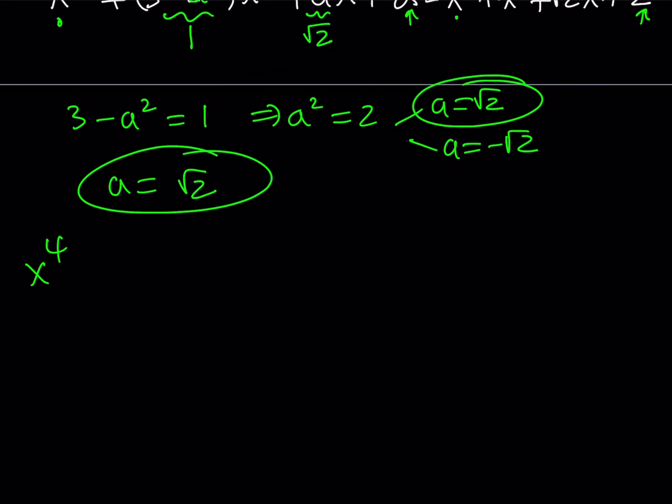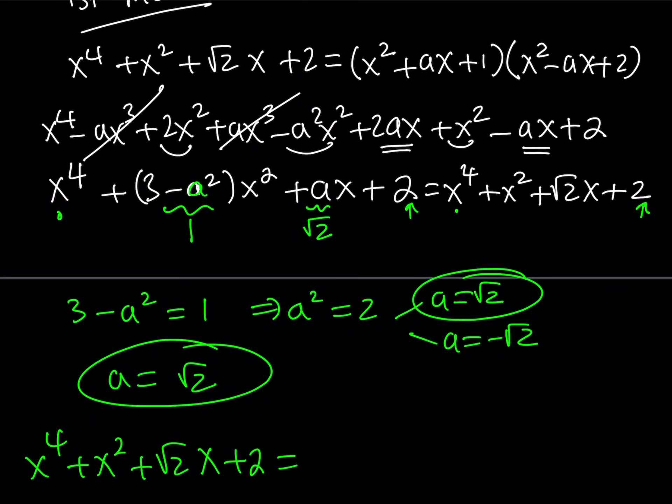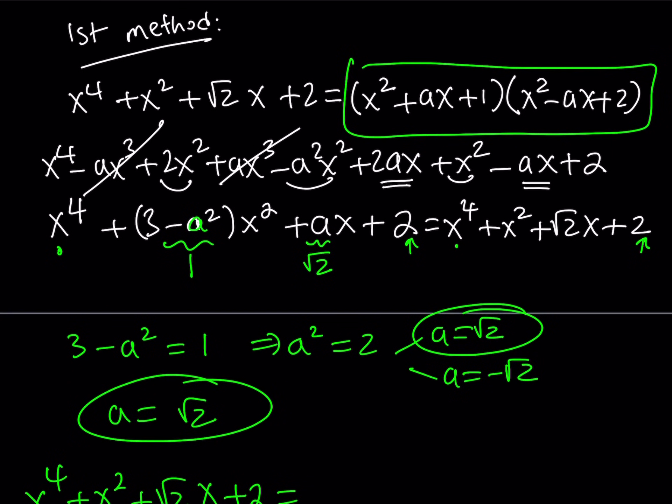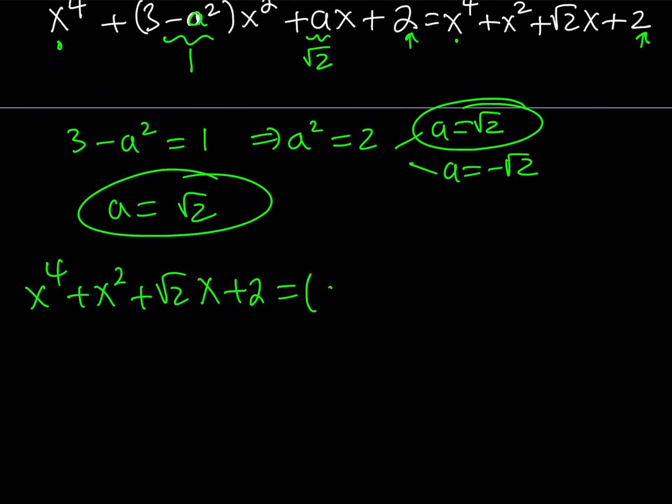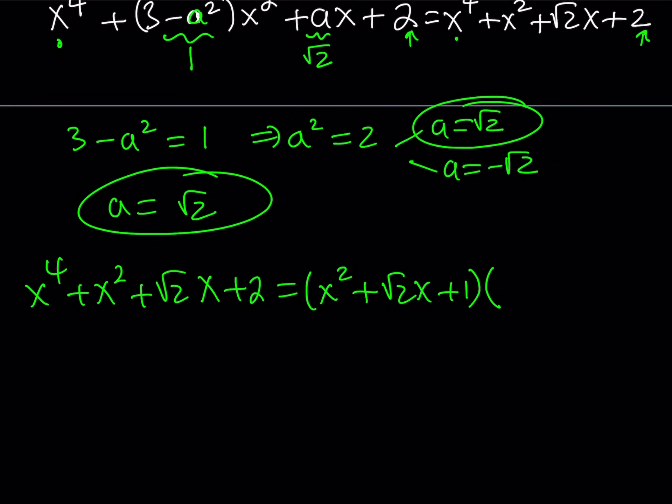So, x to the fourth. Our original expression was x to the fourth plus x squared plus root 2x plus 2. And I assume that it's factorable as this. So, I can just go ahead and replace the a with root 2. So, it's going to be x squared plus root 2x plus 1 multiplied by x squared minus root 2x plus 2. And this concludes the first method. So, let's go ahead and talk about the second method.